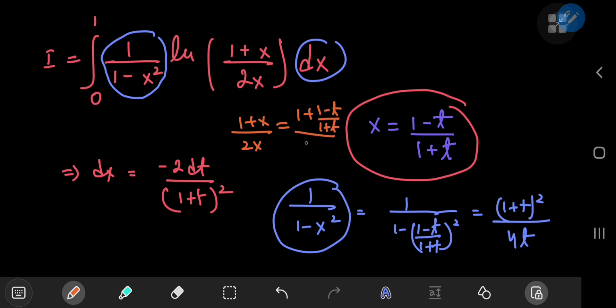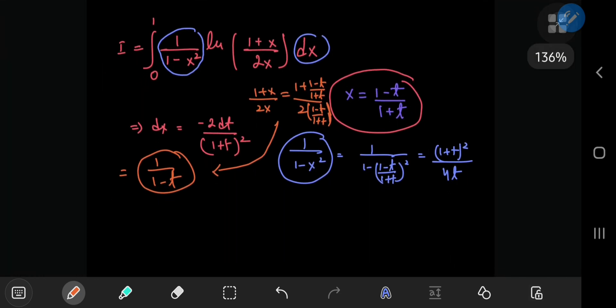So we have 1 plus x by 2x. Now this will become 1 plus 1 minus t by 1 plus t divided by 2 times 1 minus t by 1 plus t, which sorts out quite nicely.